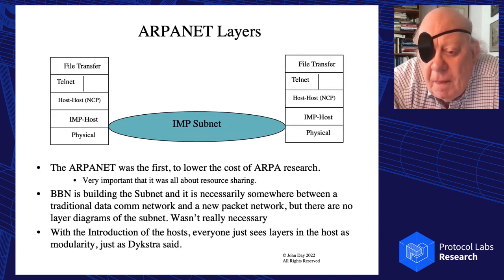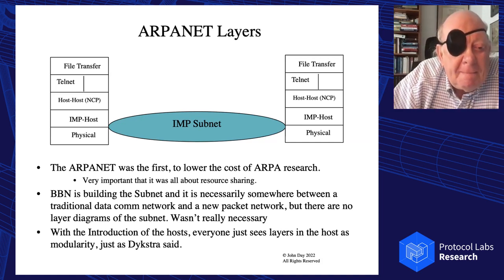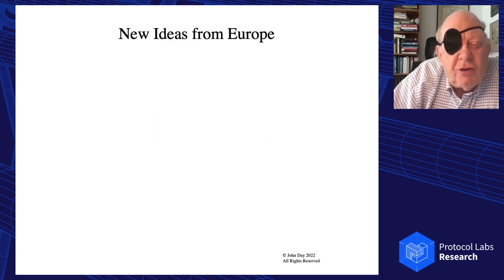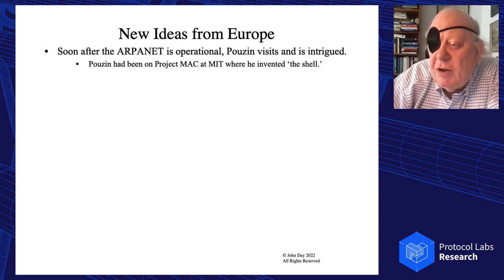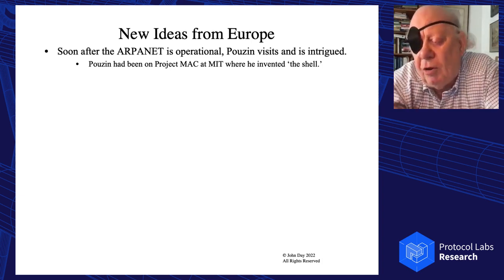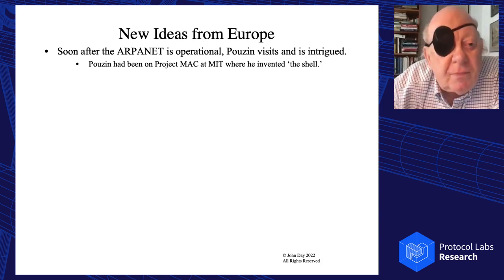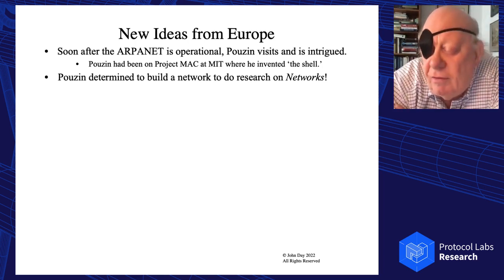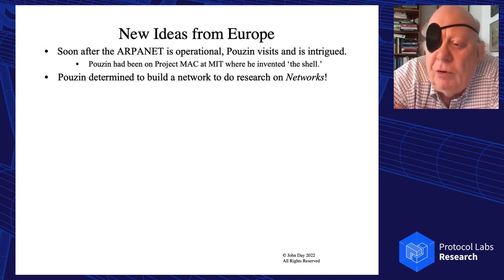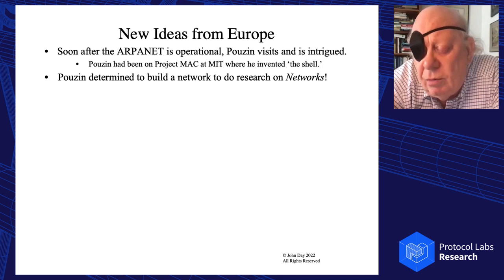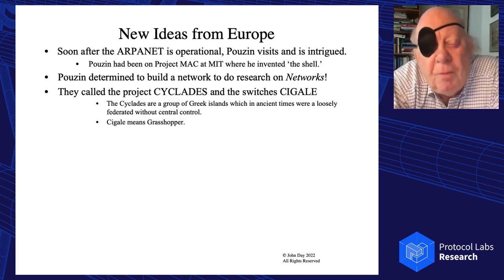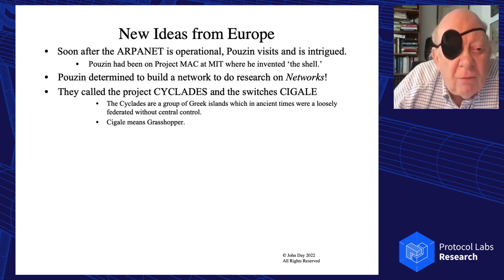Very quickly we all began to live on the net — it was amazing how fast that happened. And very quickly there were new ideas coming from Europe. Soon after the ARPANET was operational, Louis Pouzin visited the US. Louis had been on Project MAC working on Multics, where he had invented the shell. He came over and determined he was going to build a network in France. But while the ARPANET was a production network for ARPA projects — not to do research on networks — Louis was going to build a network to do research on networks.